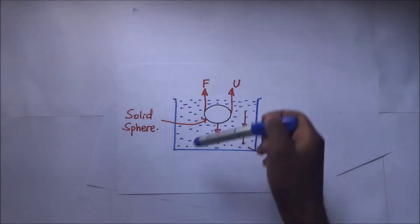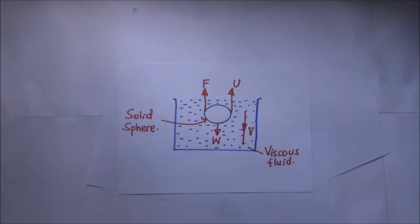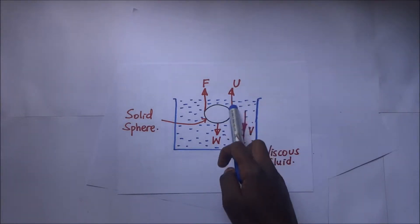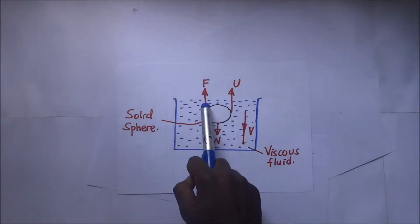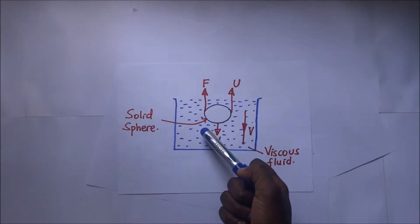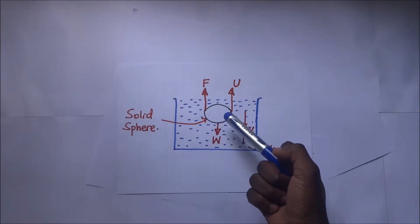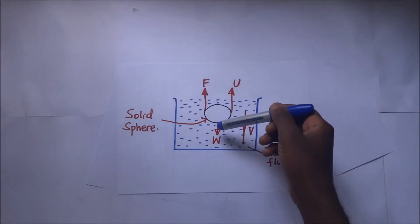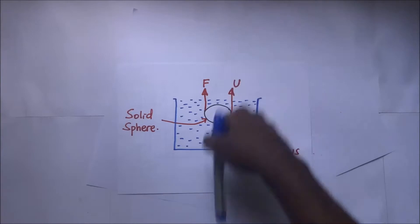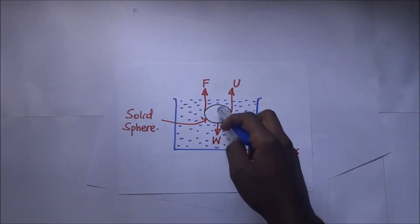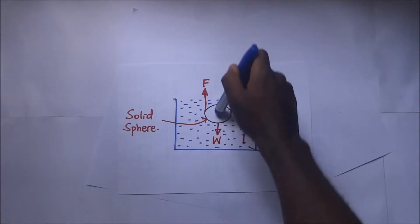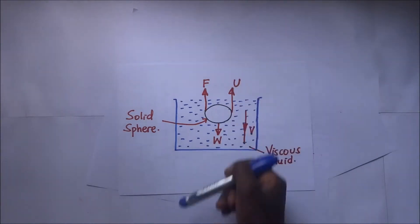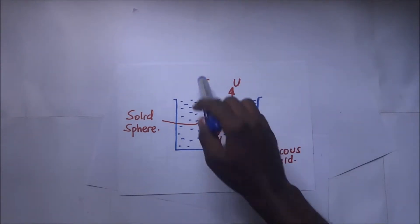When this body is falling through the viscous fluid, there are some forces acting on this sphere. These forces are the upthrust force derived from Archimedes' principle, the viscous drag force F that we discussed in our previous session on Stokes' law, and the weight of the sphere that is propelling it to fall down through the fluid. So we have one force downward and two forces upward.